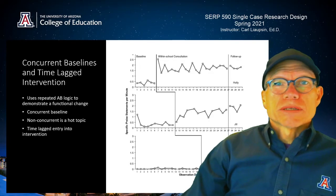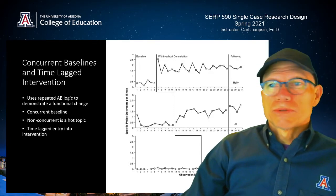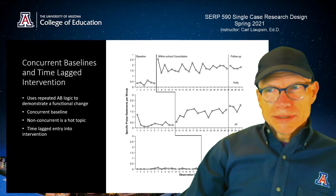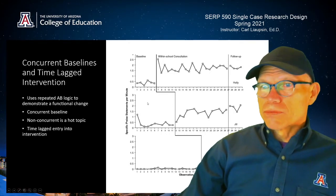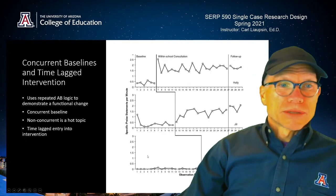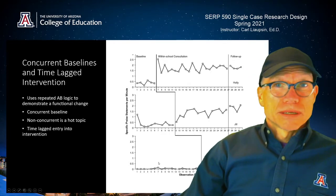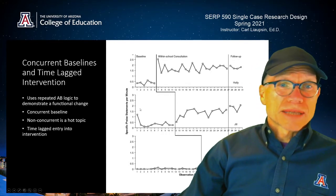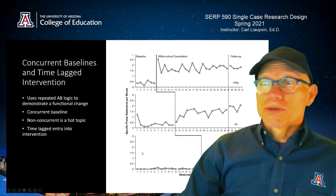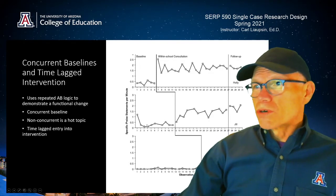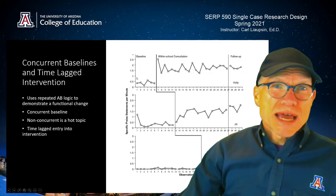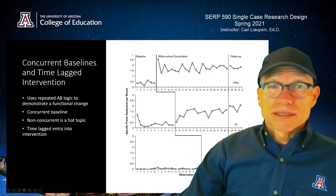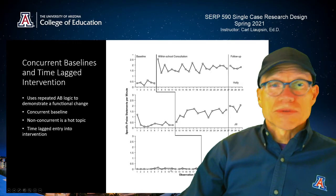It's really a pretty simple logic and it's used often in single case research, especially when you can't withdraw the intervention. Let's look at some other things common to multiple baseline designs. One of them is the concurrent baseline — these baselines run along together at the same time. Data collection happens at the same time with all students, meaning you've started all these people on the same day.